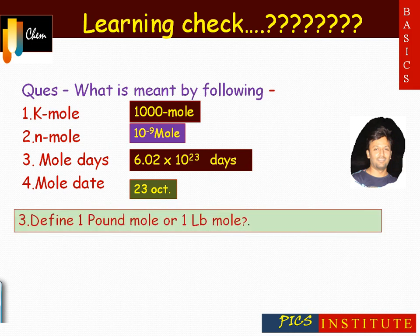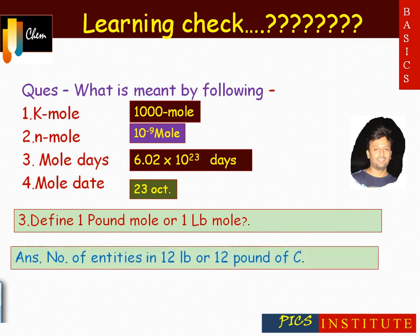Similarly, the question is: define one pound-mole. The definition is very simple — it is the number of particles in 12 pounds of carbon.